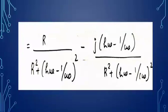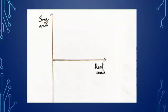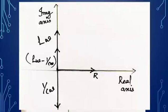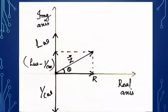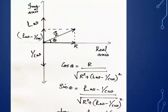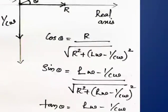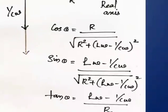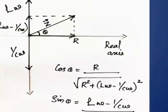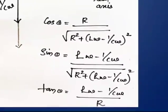Drawing the impedance triangle on the complex plane — plotting the real axis and imaginary axis — we plot R, ωL, 1/ωC, and (ωL − 1/ωC). The resultant of R and (ωL − 1/ωC) is Z. From this triangle: cos θ = R/√[R² + (ωL − 1/ωC)²], sin θ = (ωL − 1/ωC)/√[R² + (ωL − 1/ωC)²], and tan θ = (ωL − 1/ωC)/R.